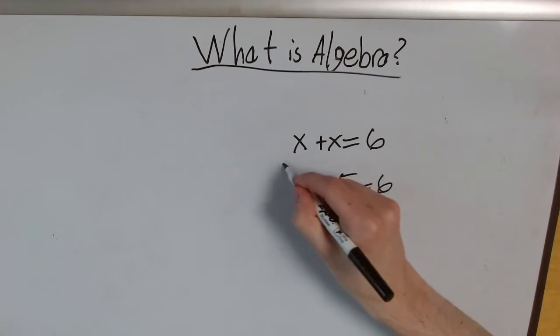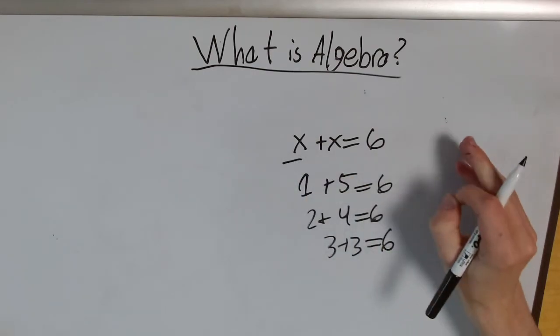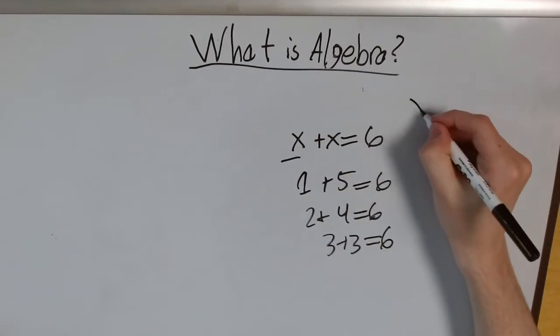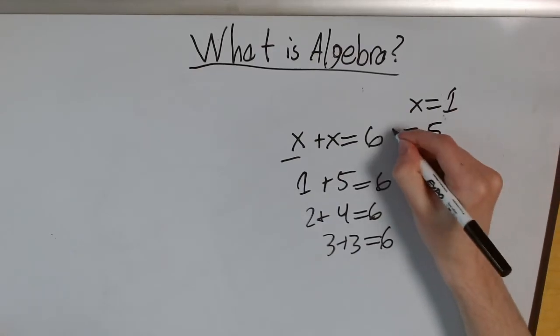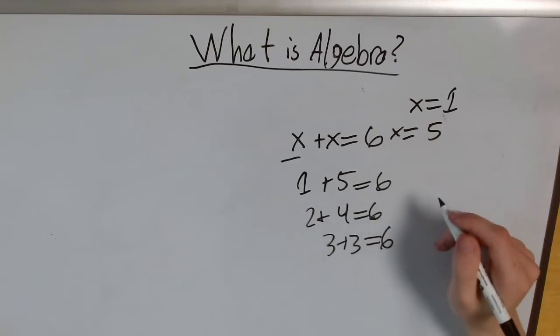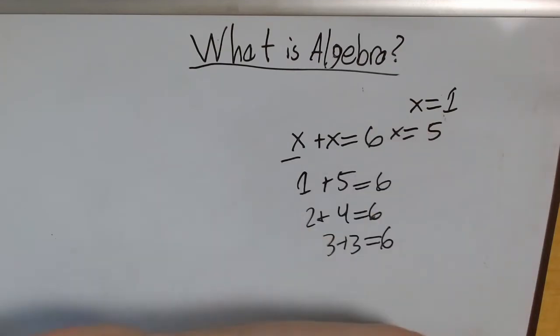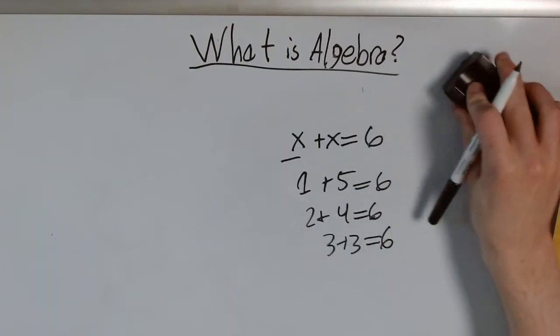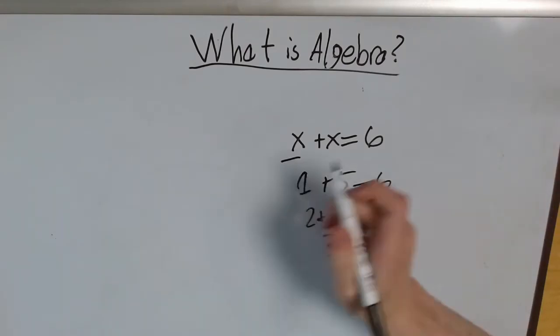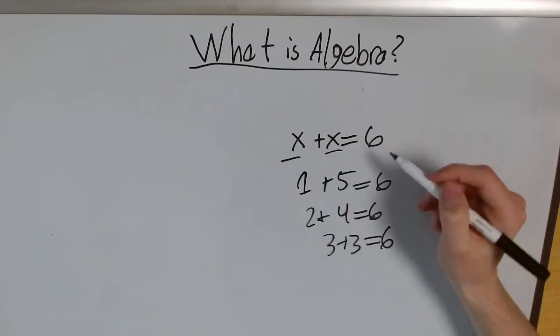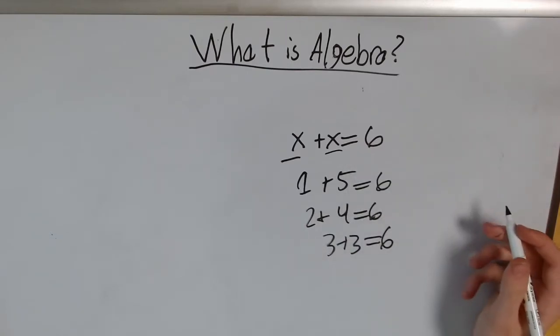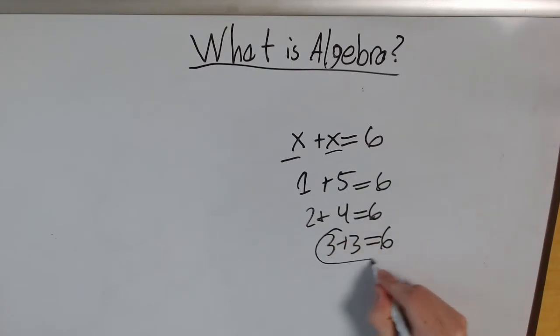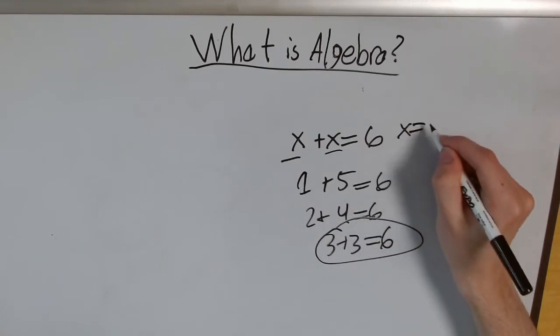But x is a single variable, right? We can't have x equal to 1 and to 5. It doesn't make any sense. x has to be equal to a single value. So, what we're really asking is, what number, when I add it to itself, will get me 6? And all these problems we have listed here, the only number we see that works for this is 3. So x equals 3.